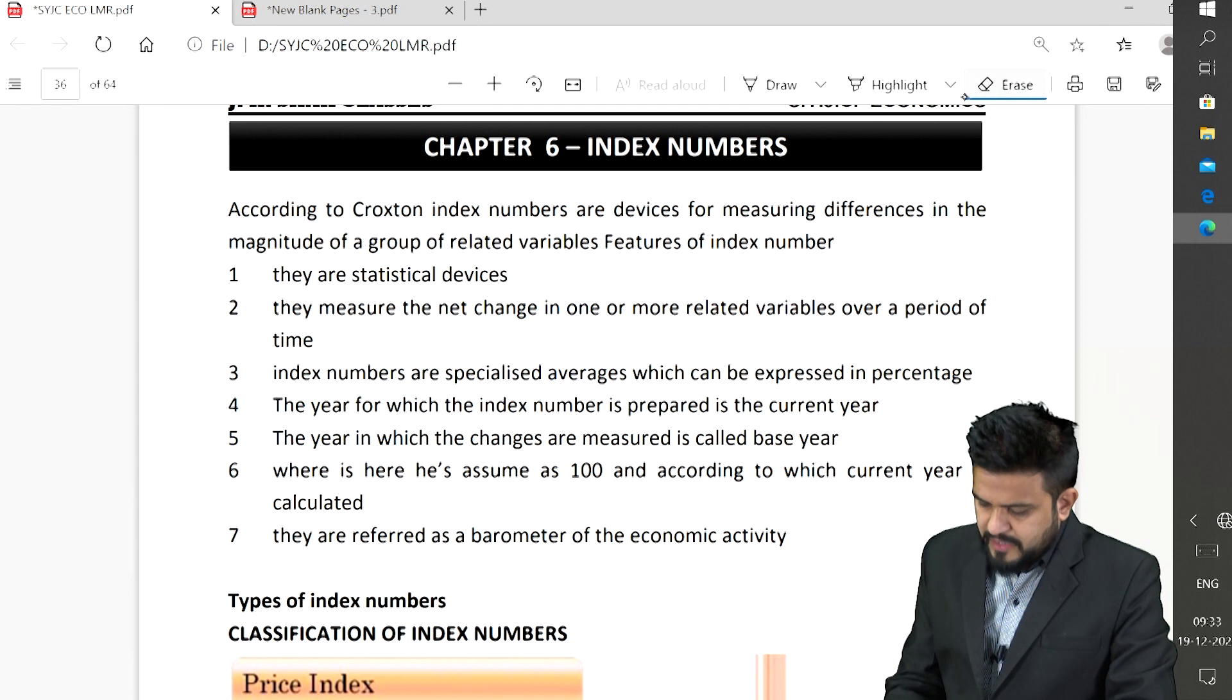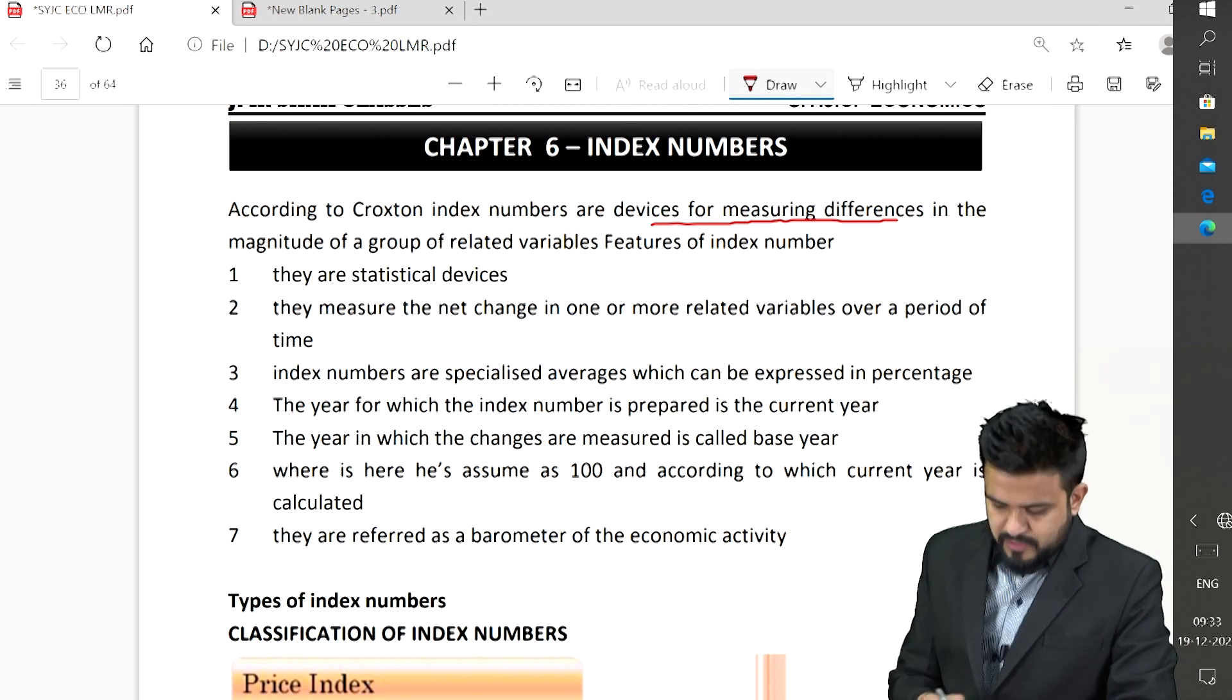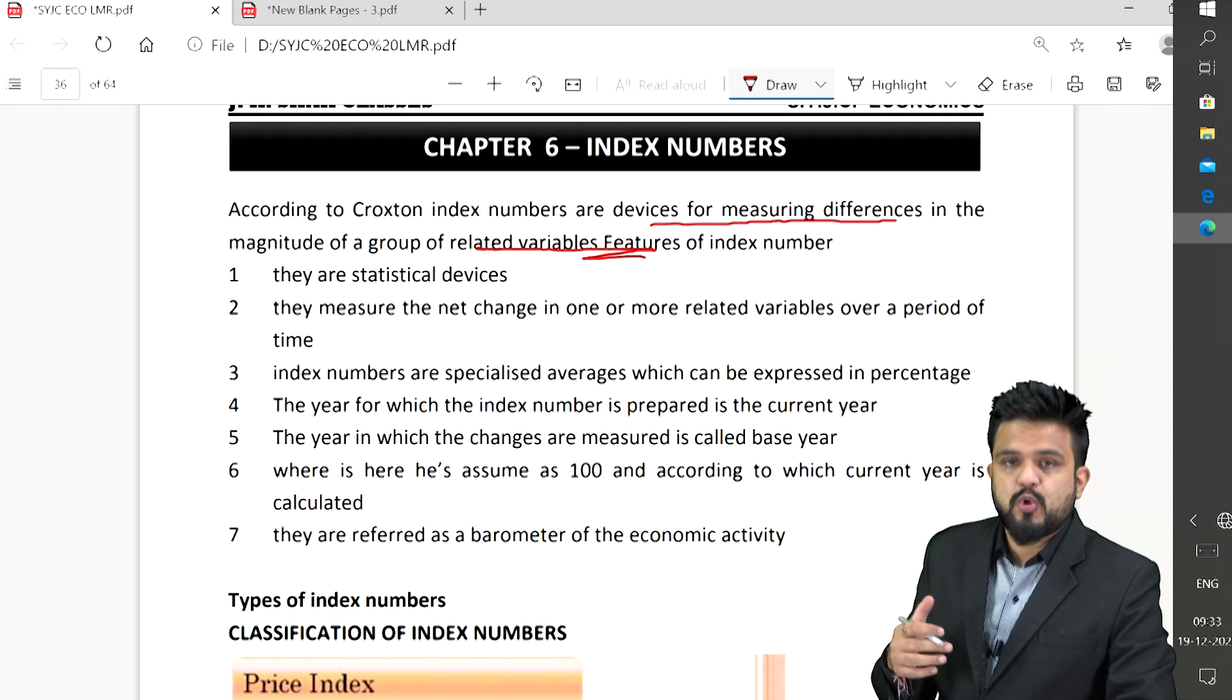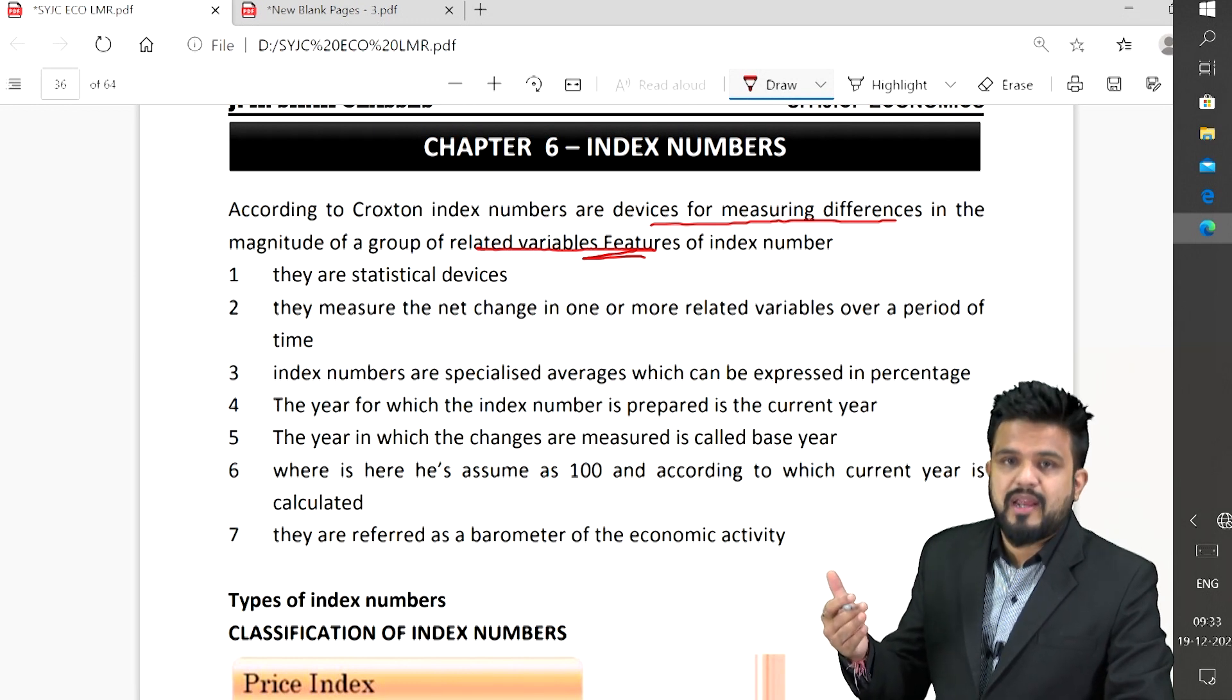Basically, the index numbers are devices for measuring differences in the magnitude of a group of variables. Index numbers help you to calculate GDP, inflation, industrial production, changes taking place in stock market, all those things.